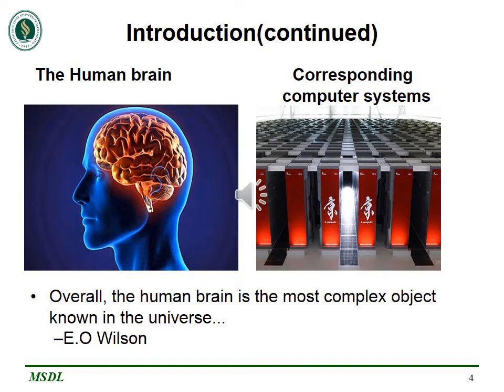I'll be concluding my introduction by quoting what E.O. Wilson said: "Overall, the human brain is the most complex object known in the universe." That is to say, if humans are able to develop devices that can mimic or imitate the human brain, there will be tremendous advancements in our modern technology society.